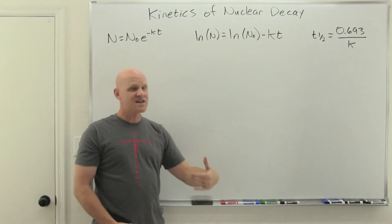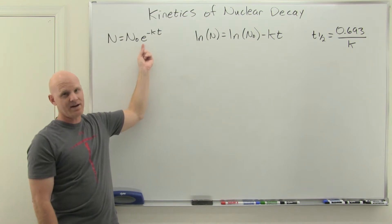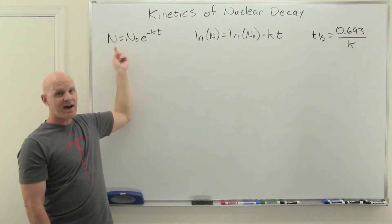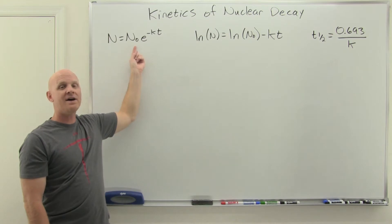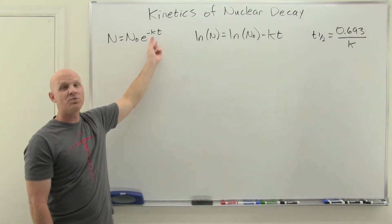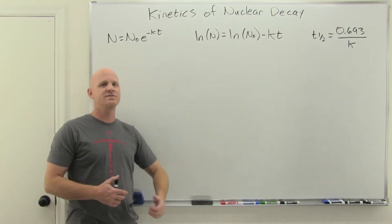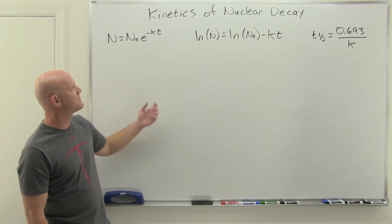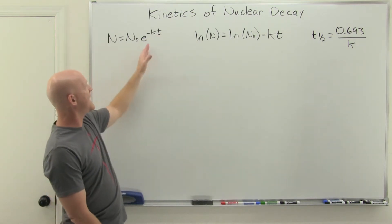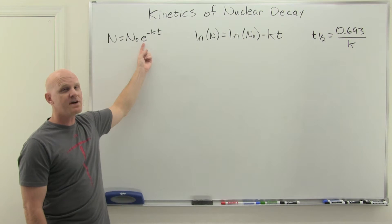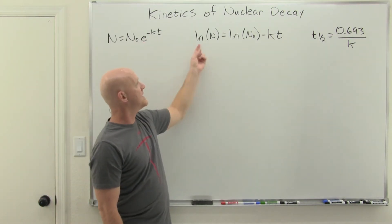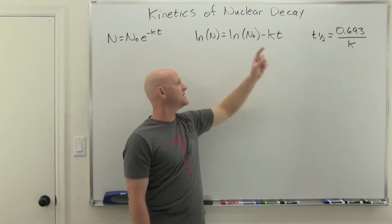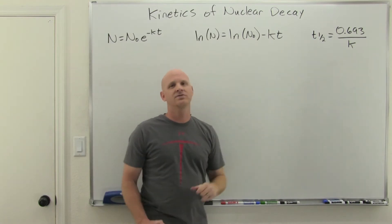These two equations are really just the same equation represented in two different ways. In the first one, you can see the exponential decay. N is the amount of a radioactive substance you have now — N at time T — whereas N-naught means how much you had initially at time zero. K is called a rate constant; chemical reactions have a characteristic rate constant related to how fast they go. T is time. You could also take the natural log of both sides — the natural log being the inverse of the exponential function. That gives you: ln(N) = ln(N₀) − kt, where k is the rate constant and T is the passage of time.